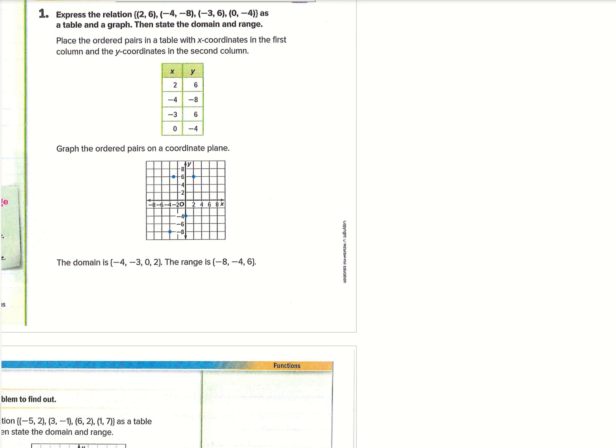So then after we look at that graph, we've also got the domain and the range listed for us. Again, you're going to notice that the domain is all of your x values, and the range is all of your y values.